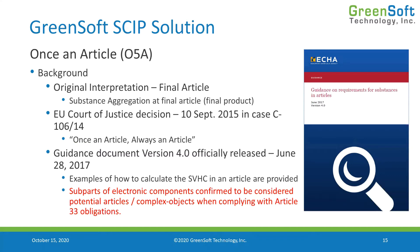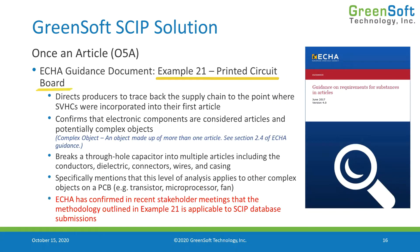This was made more complex in 2017 when we got a guidance document from the European Chemicals Agency showing how to calculate SVHCs in articles. It confirmed that electronic components could be considered potential complex objects containing multiple articles. Example 21 within this document breaks a PCBA apart and confirms that an electronic component such as a capacitor is made up of multiple articles — including conductors, dielectric, connectors, wires, and casing. It notes that this level of analysis applies to other objects on the PCB like transistors, microprocessors, and fans.